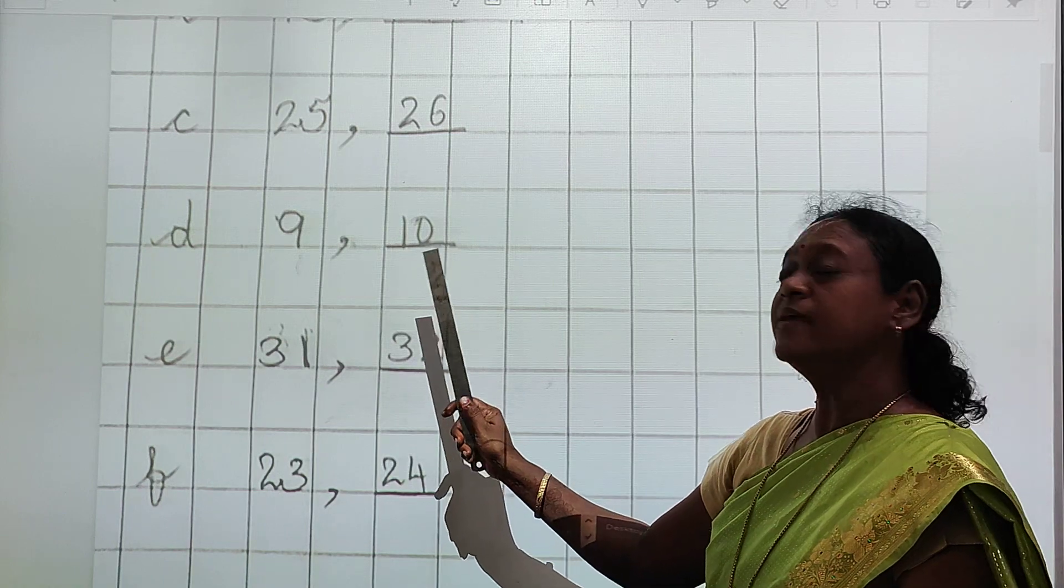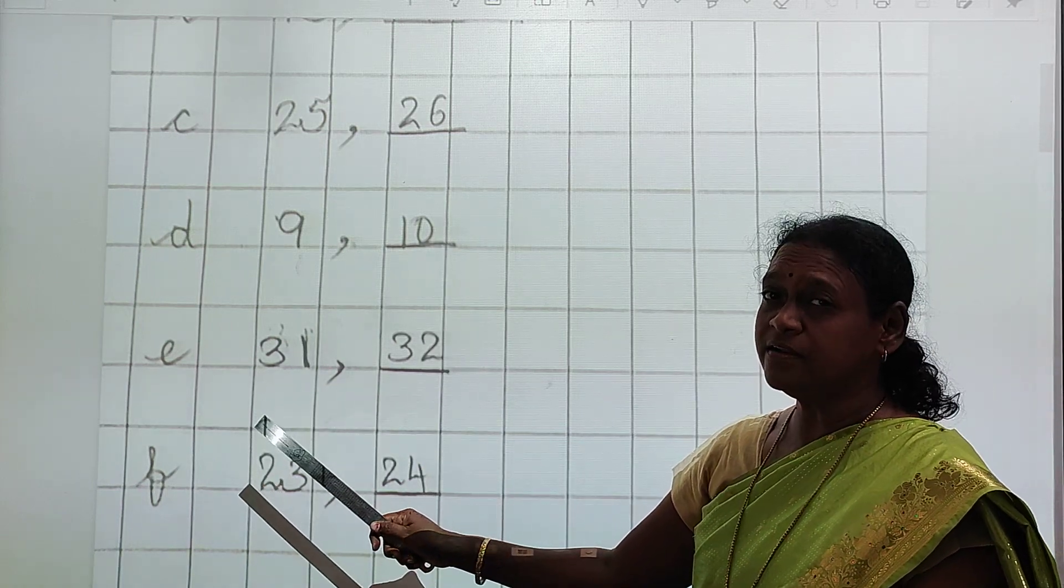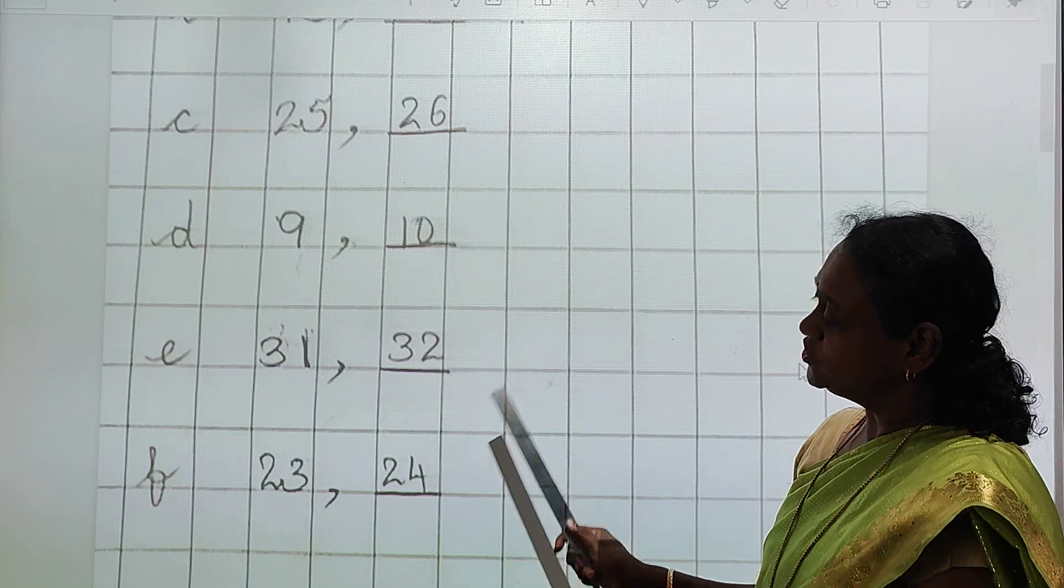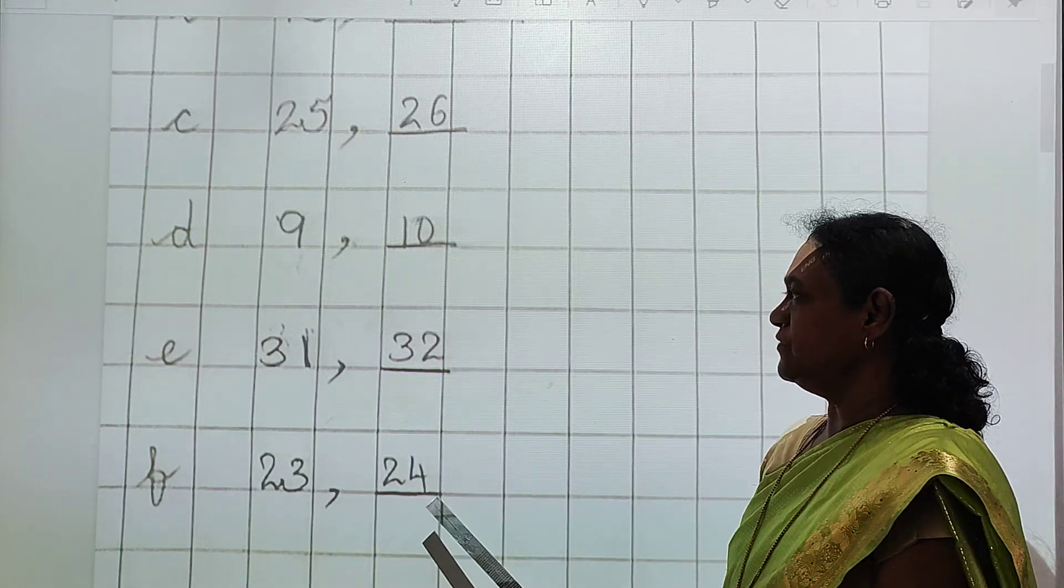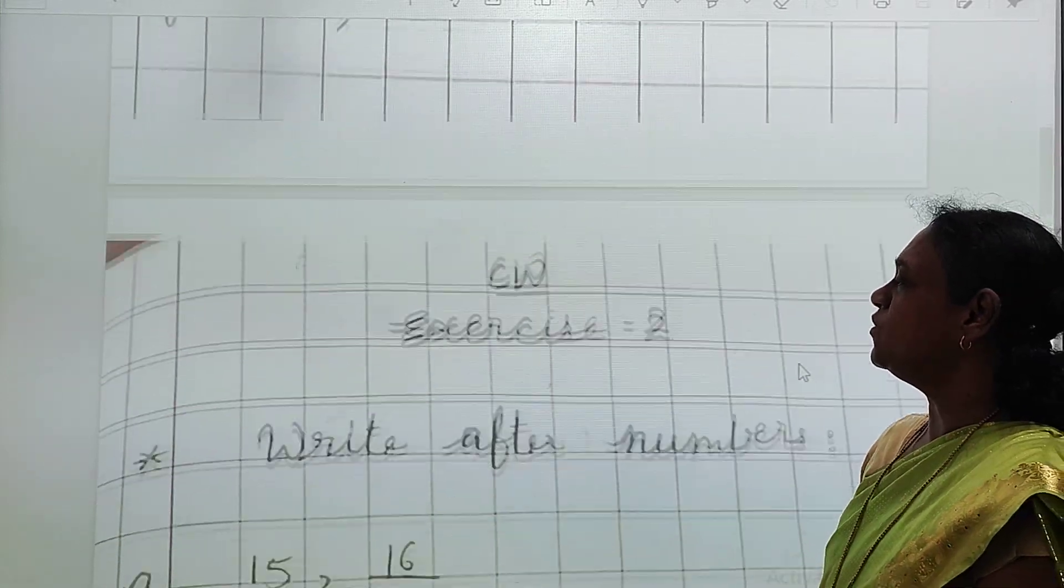9 ke baad kya aata hai? 10. What comes after 31? 32. What comes after 23? 24. Okay children? So you have to write in your notebook.